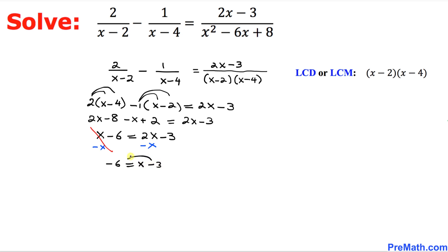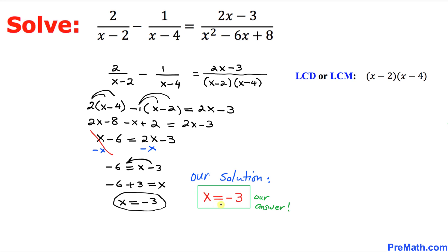Let's move this negative 3 on the left-hand side. So we got negative 6 plus 3, this negative 3 is going to become positive 3, equal to x. So that means x turns out to be negative 3 as our solution. Thus our solution turns out to be x equal to negative 3, and that is our answer.